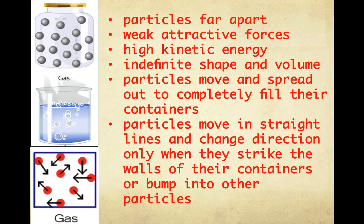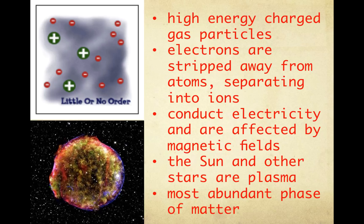And now let's consider plasma — high energy charged gas particles. Because of the high temperature, electrons are stripped away from atoms, separating them into ions. Because of their charges, plasma can conduct electricity and are affected by magnetic fields. The sun and other stars are composed of plasma. Plasma, though you're not very familiar with it, is the most abundant phase of matter in the universe.